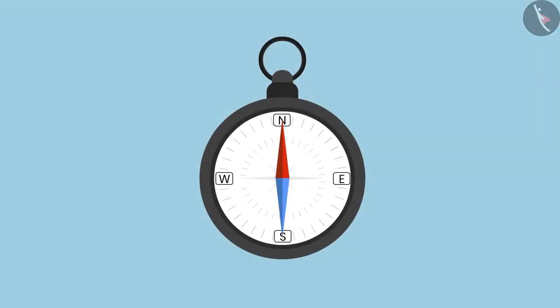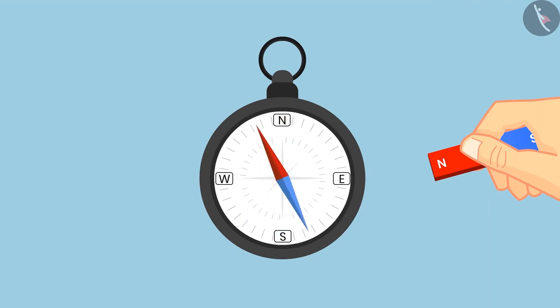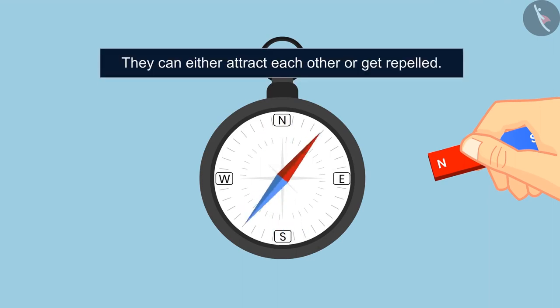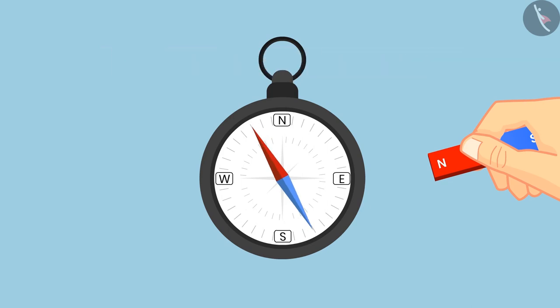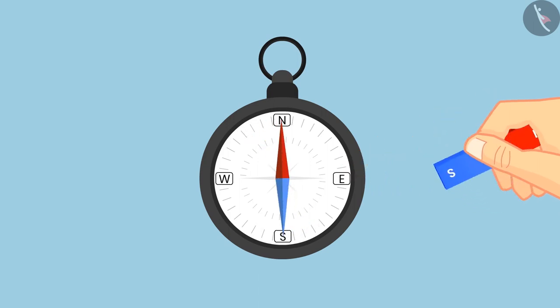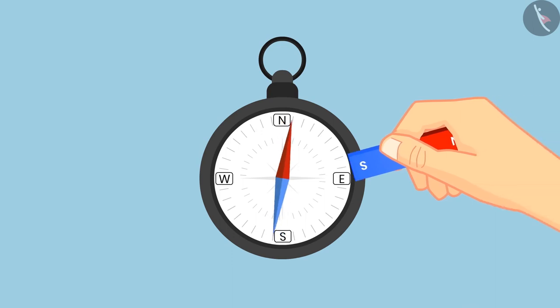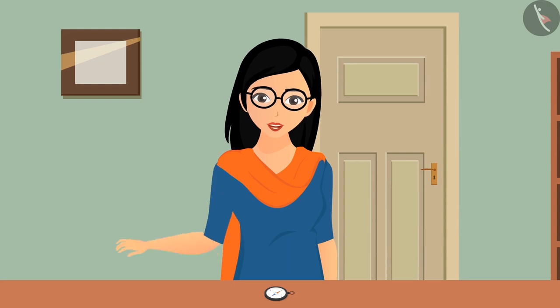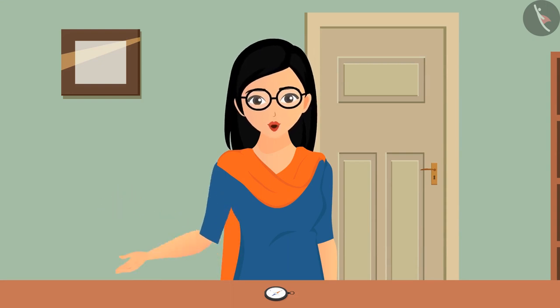They can either attract each other or get repelled. If the north pole of the bar magnet is brought near the compass, it will attract the south pole of the compass towards it. Similarly, the south pole of the bar magnet will attract the north pole of the compass. Let's perform this experiment to understand Oersted's work.